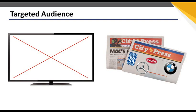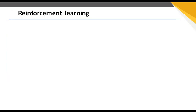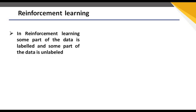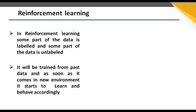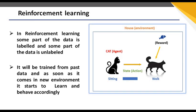We can say that our targeted audience means we have to take those points where people want to understand, so we can apply a filtering formula in terms of computer science areas. When we talk about reinforcement learning, some part of the data is labeled and some part is unlabeled. The model is trained from past data and as soon as it comes into a new environment, it starts to learn and behave accordingly.